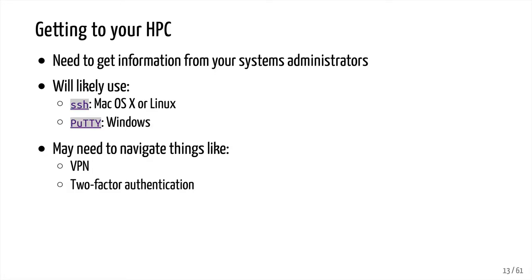To get to your HPC: if you're working with a local HPC, you'll need information from your systems administrators — they'll typically have tutorials and information to get you up and going. For accessing your local HPC as well as AWS, you'll likely use SSH if you're using a Mac or Linux — SSH comes pre-installed on both. If you're on Windows, you'll want to download a program called PuTTY. If you're accessing a local HPC, you might also need a VPN or two-factor authentication.